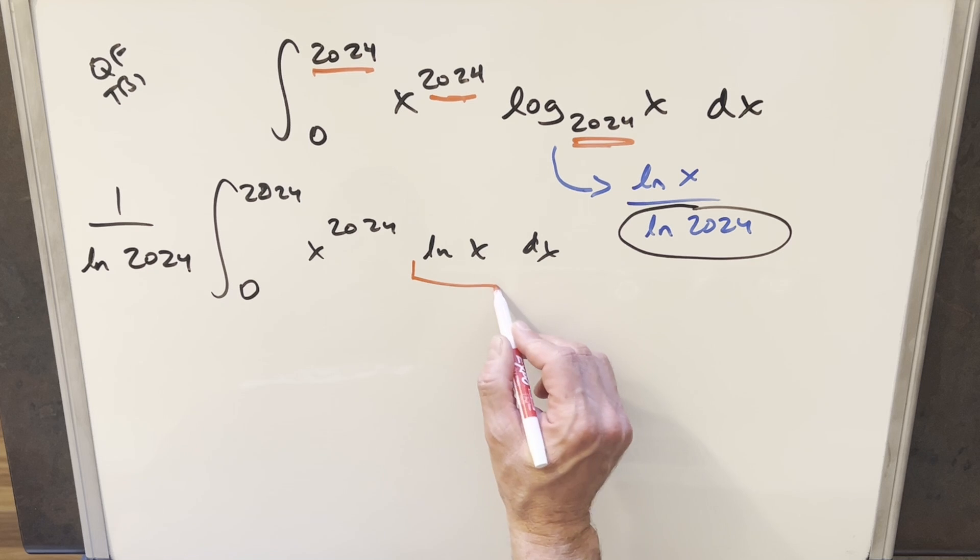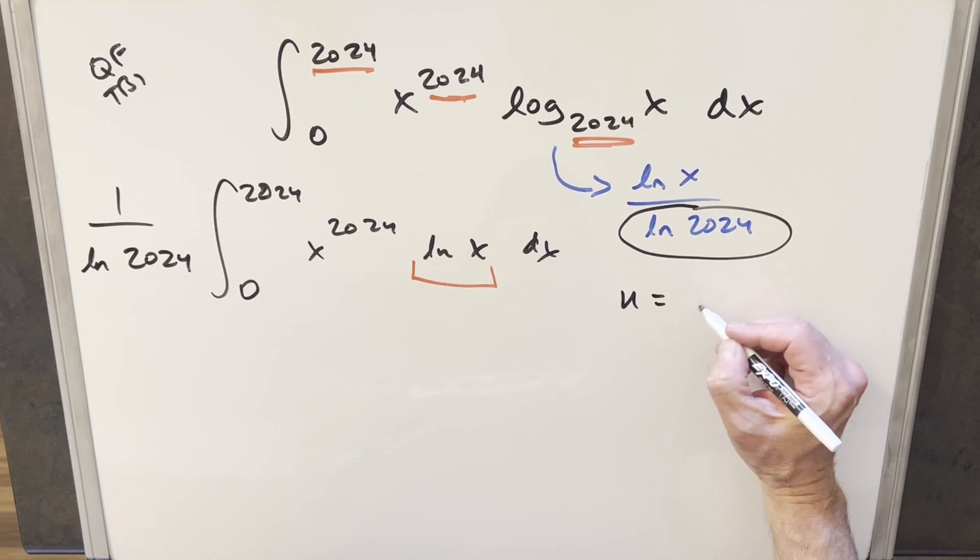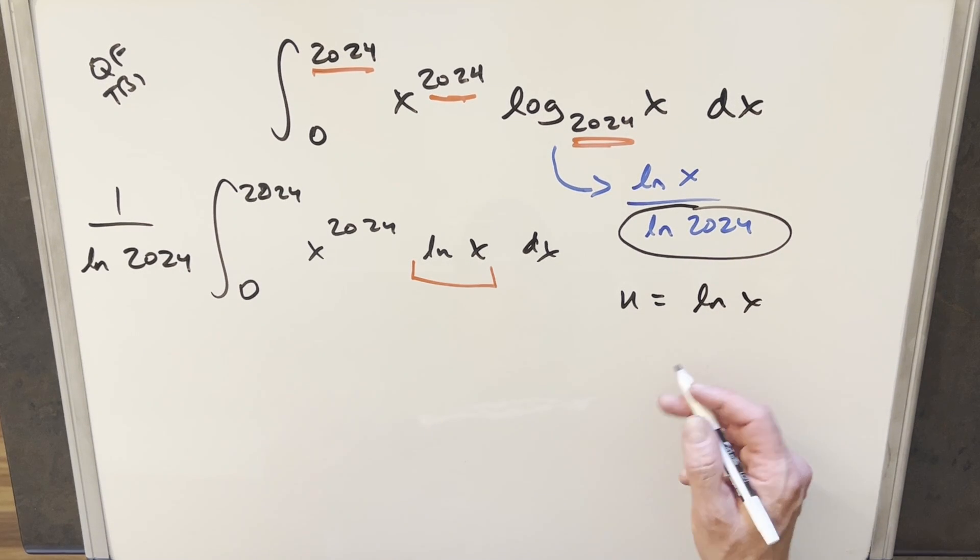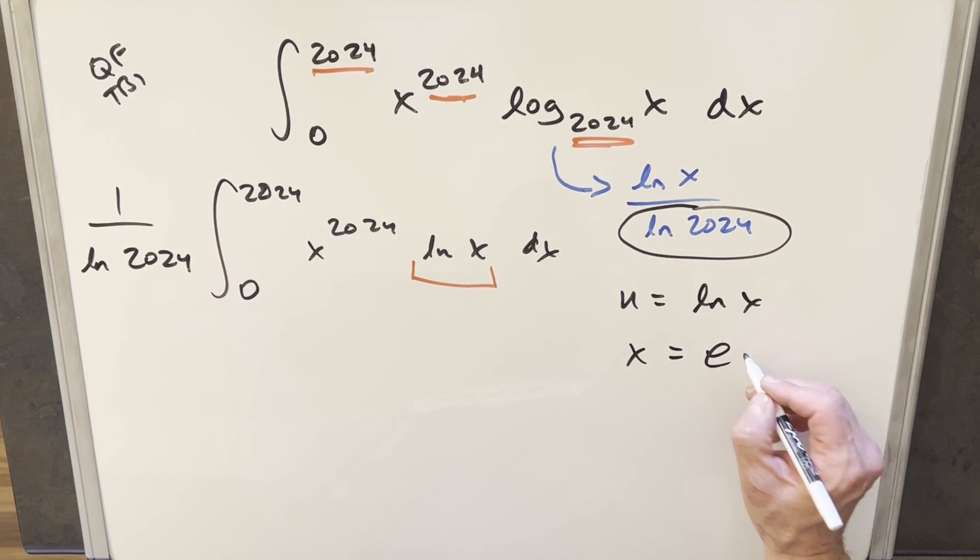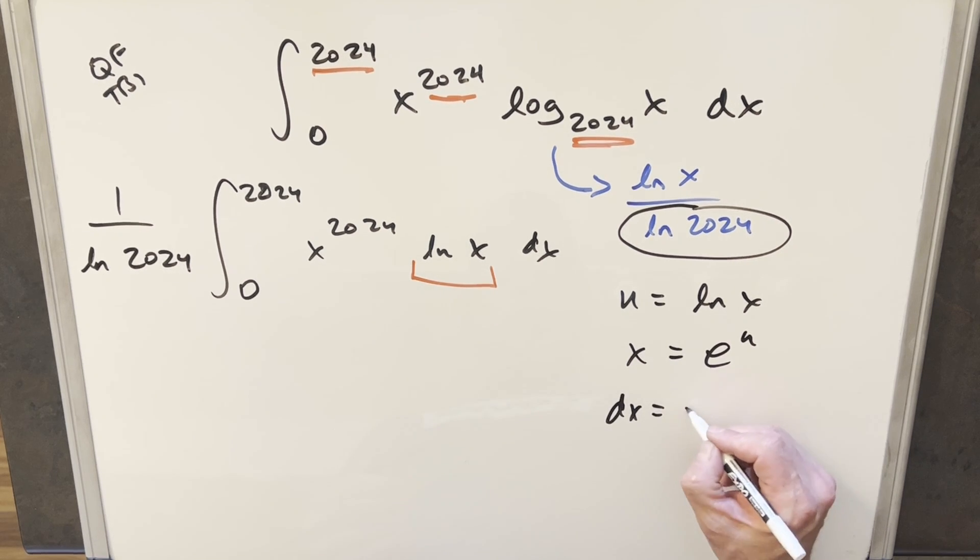And now this is starting to look like something where we could use integration by parts. But it's kind of awkward having natural log x in this. So what I want to do is let's do a u substitution to try to clean this up. So if I set u equal to natural log of x, then I can solve for x. Rearranging this, we get x equal to e to the u. Taking a derivative on this, for our dx value, we're just going to end up with e to the u du.